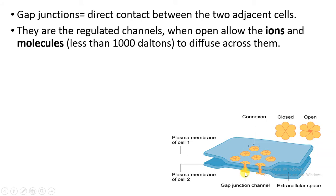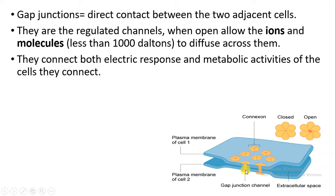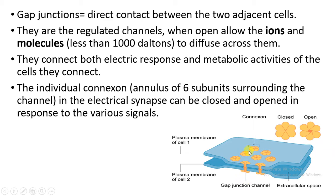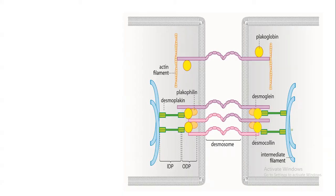The gap junction acts like a channel through which ions and molecules are easily able to move from one cell to another. Molecules less than 1000 daltons can diffuse easily from one cell to another, from higher to lower concentration. Gap junctions also connect electrical responses and metabolic activities. Each connexin consists of six subunits, and the electrical synapse can be closed and opened in response to various signals. When transfer is not required, the connexin can be closed.